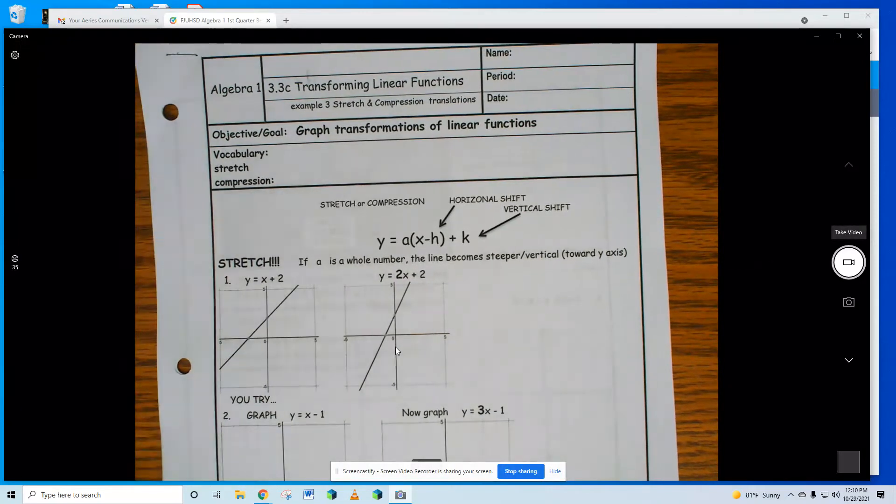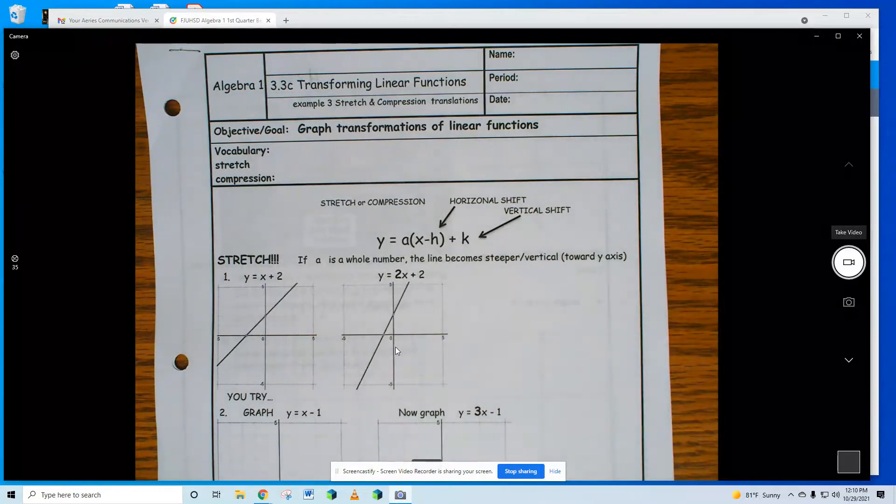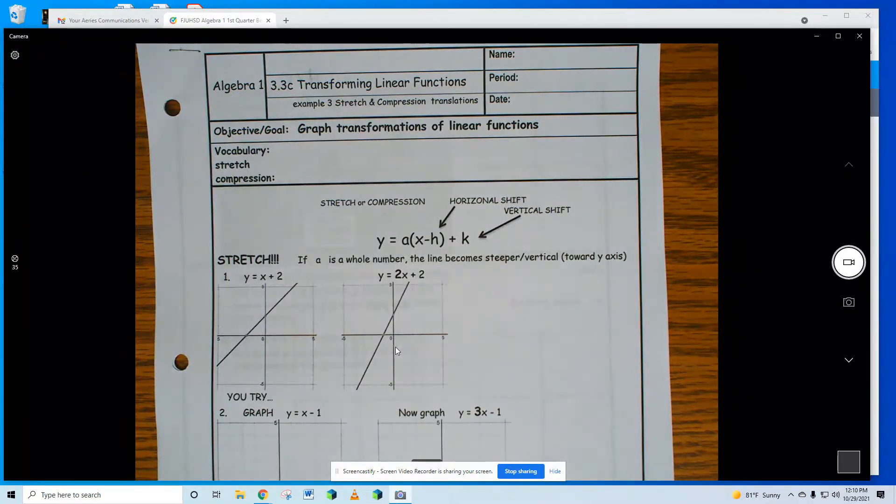Our lesson today is the third part of transformations. A transformation has two things we've learned so far: the h that's in parentheses has the ability to shift left and right, and it's the opposite sign of whatever it is. So if in parentheses I had x plus 2, that means 2 to the left.